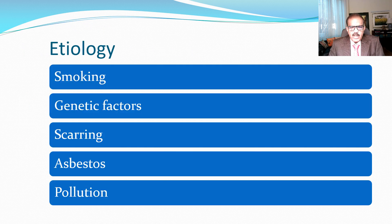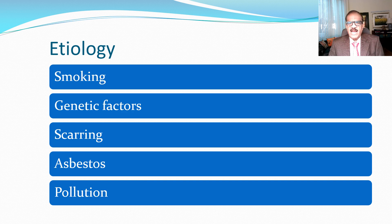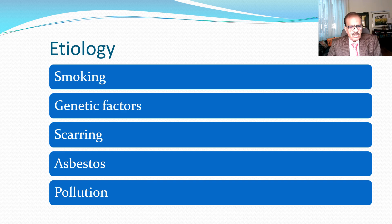Etiology: smoking is important, genetic factors are important, and scarring — those who have had previous infections, lung abscess, or tuberculosis can sometimes develop malignancy from that scar. Asbestos is one industrial substance; those exposed to asbestos are definitely prone to develop mesothelial lung cancer but also bronchial cancer. Other types of pollution are also important, like exposure to radiation.